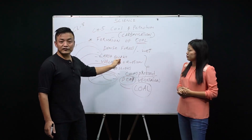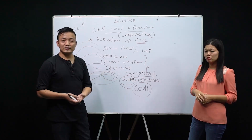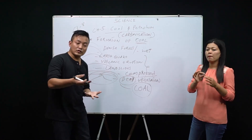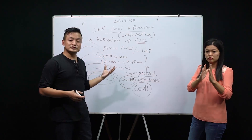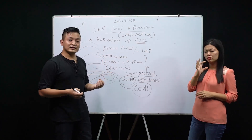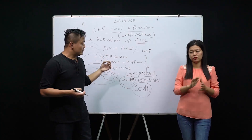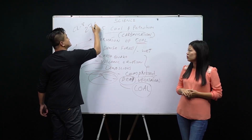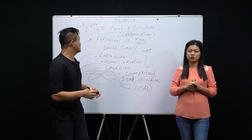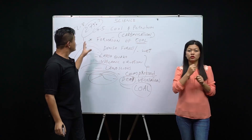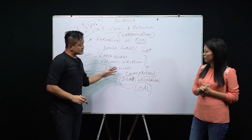Coal is used for burning and for running engines. It is used for generating heat and electricity. Also remember that coal gives us 27% of the world's global energy requirement. So coal contributes 27% of the world's energy requirement.